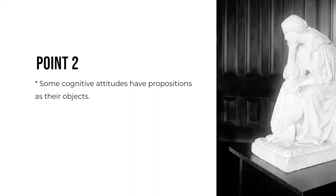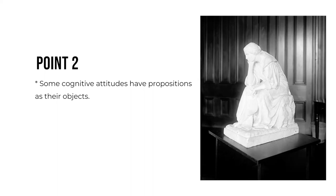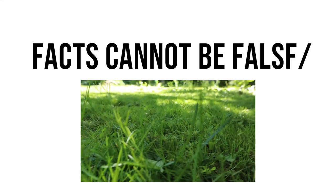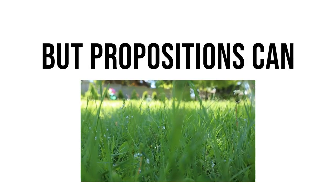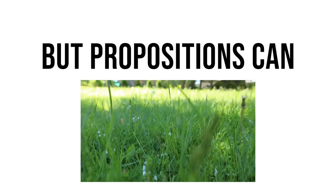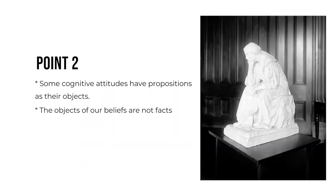Second, it's natural to think our cognitive attitudes such as belief and doubt are about propositions. Many beliefs and doubts are about something — they have an object. They are certainly not about facts, since sometimes I have false beliefs and it makes no sense to say there are false facts. The fact that grass is green couldn't really exist unless grass was green. But the proposition that grass is green could exist, since propositions can be false. It also makes no sense to say that my beliefs and doubts are about sentences.